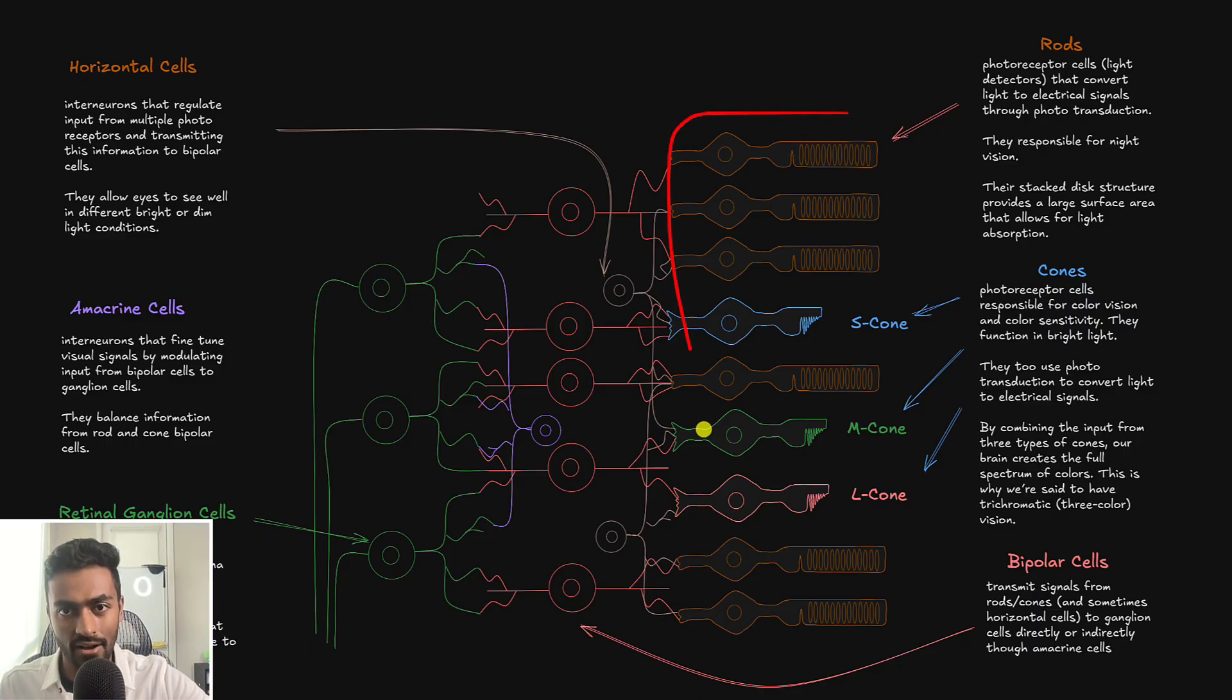Now the cells in the back over here are known as photoreceptors. They literally detect light, and they convert this light into electrical signals that are then propagated in this direction. So they do this through a process known as phototransduction. Now there are two types of photoreceptors here. The first is the rods, and the second is the cones, and they are named because of their rod-like shape and cone-like shape respectively. Rods are good for nighttime vision, and they do this because they have such a large surface area, which makes it easy to absorb light, and hence they activate even with very small amounts of light hitting them.